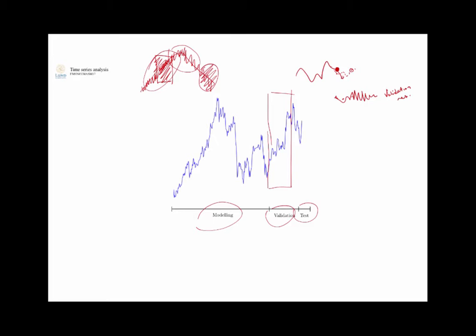You move ahead, predict one sample ahead, then pretend you knew that sample and predict one more ahead, and so forth—walking through your entire validation set making one-step predictions all the way through. Typically this residual will not be white noise the first time; there will be some structure in it, for instance a periodicity that you weren't able to capture with your model. So you go back, improve your model, and then check again.